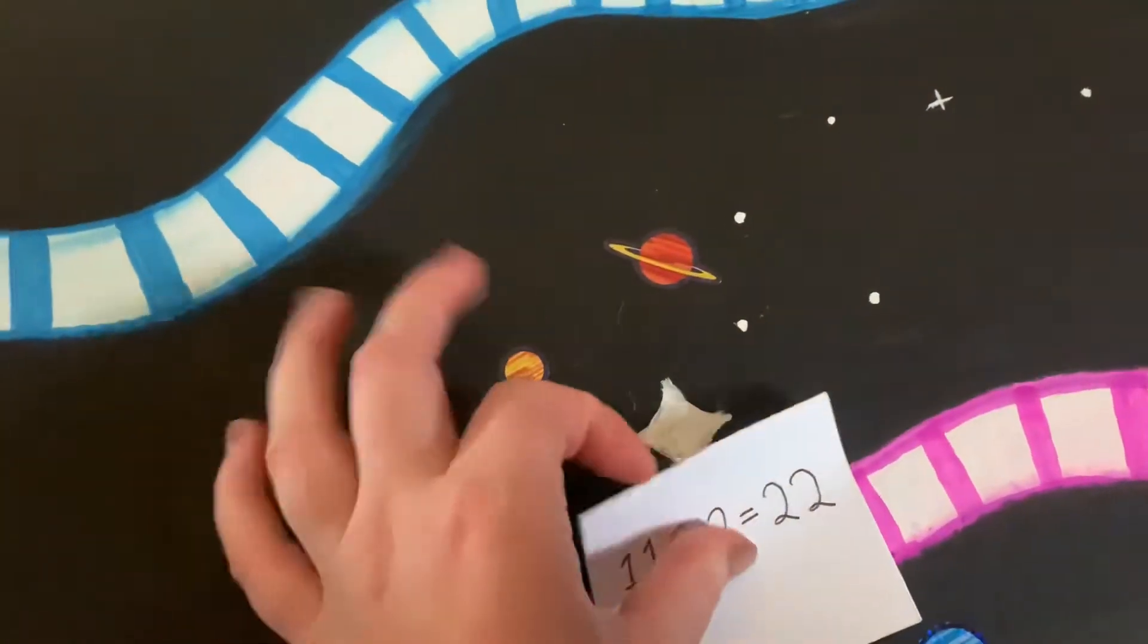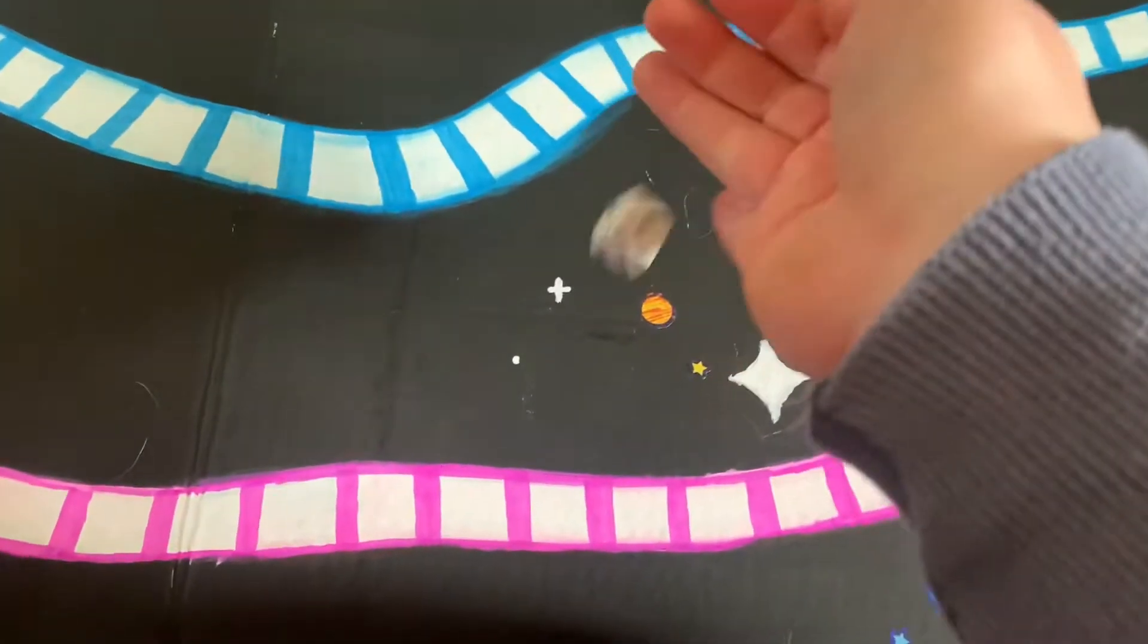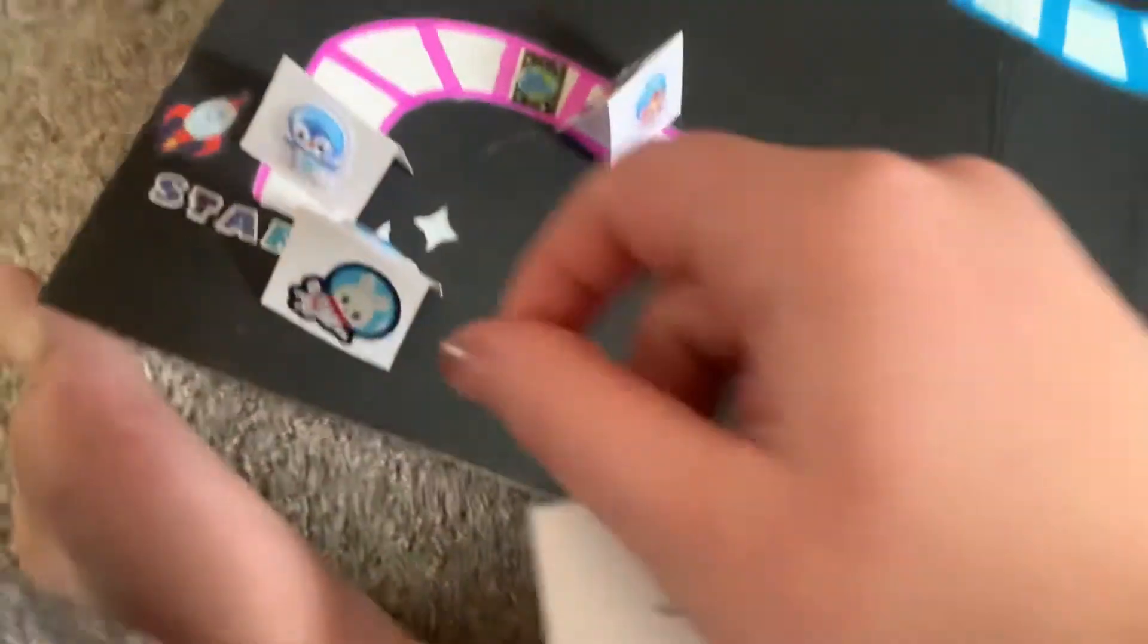If you get the answer correct, wait till your next turn to repeat the process. So this time you roll the die and you move the space. You pick up an index card.